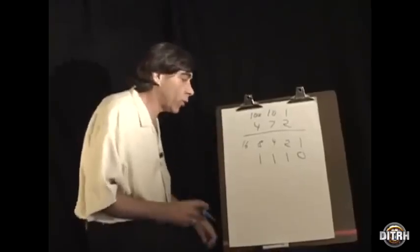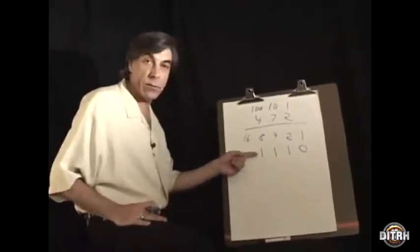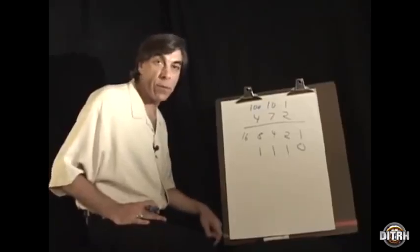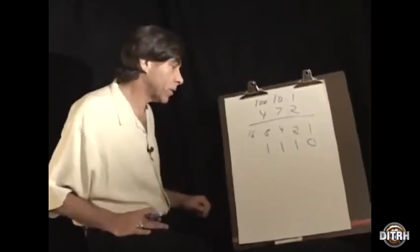This kind of arithmetic is appropriate for computers because they deal with electricity, which can either be on, represented by one, or off, represented by zero. The flow of electricity or no flow of electricity, these powers of two.